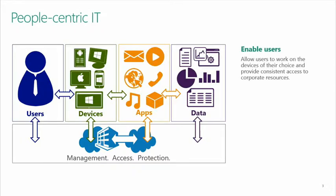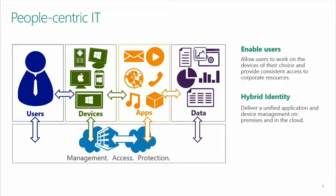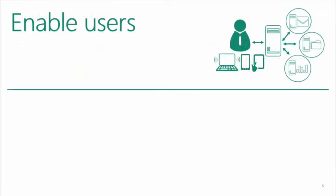I'm going to walk you through three areas. The first is about enabling users — how do you get users up and running on the device of their choice and enable them to access resources and applications? When you think about hybrid identity, the unification of both on-premises and cloud: how do you give access when some applications and data sit on-premises on file and application servers, and some are out in the cloud, maybe on Office 365? How do you consistently give a single sign-on experience with a common identity — same username, same password, same experience? And then we'll talk about protecting data, ensuring it remains secure so you can rest easy knowing you're in control.